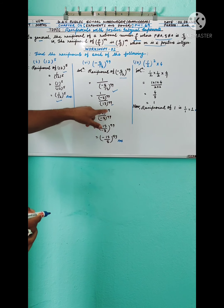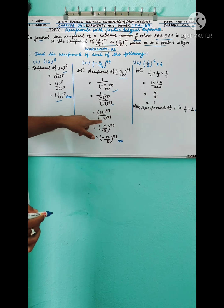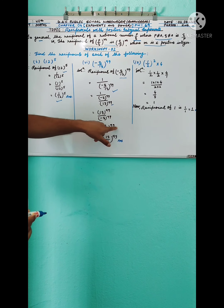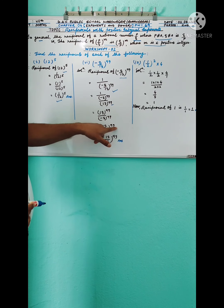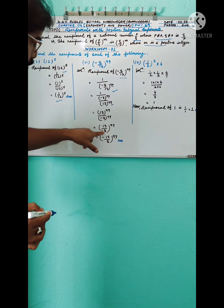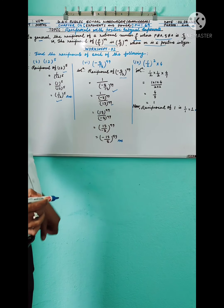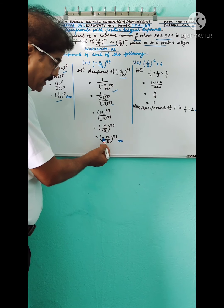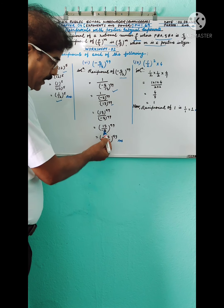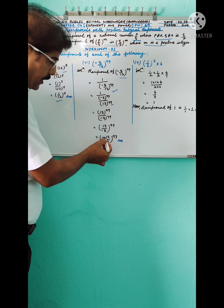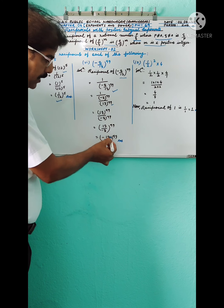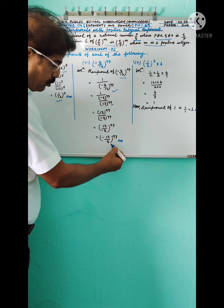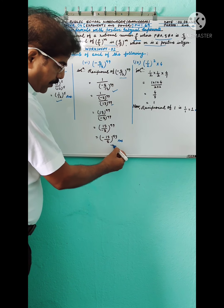So the reciprocal of (−8/13) to the power 99 simplifies to (13 / −8) to the power 99. Writing it in standard form, this is (−13/8) to the power 99.